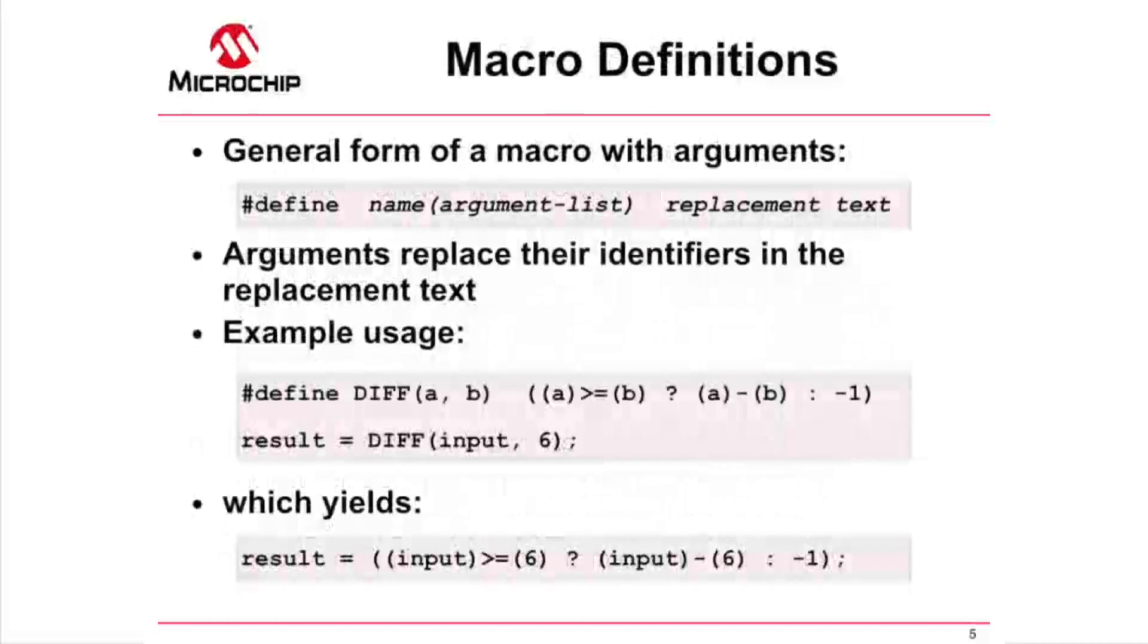Preprocessor macros can also be defined to have one or more arguments. The general form of such a macro is shown here in the top example. Such macros allow you to use the arguments in the replacement text and perform more complex substitution. Whenever the argument's identifier is encountered in the replacement text, it is replaced with the corresponding argument specified when the macro was invoked.